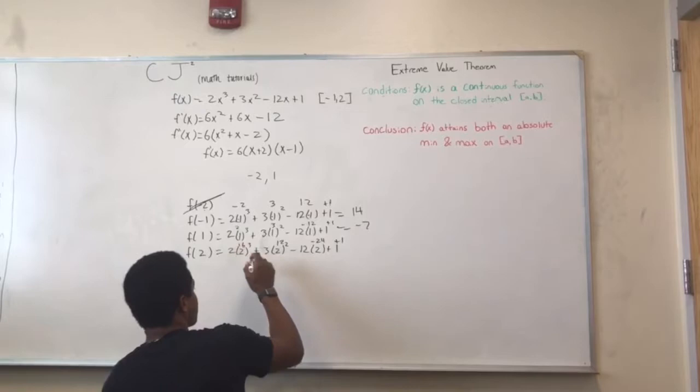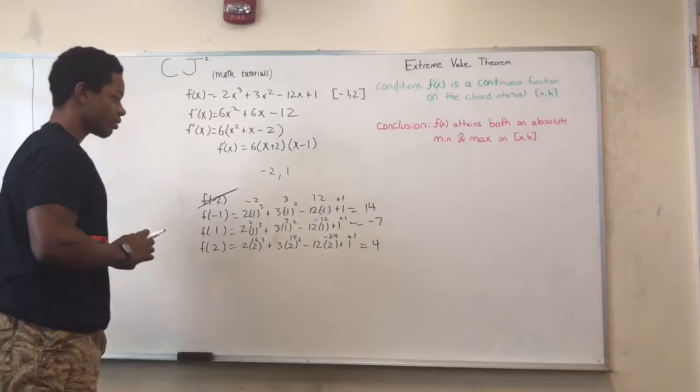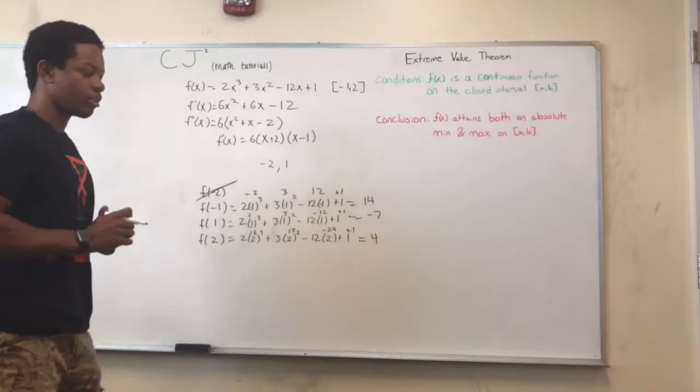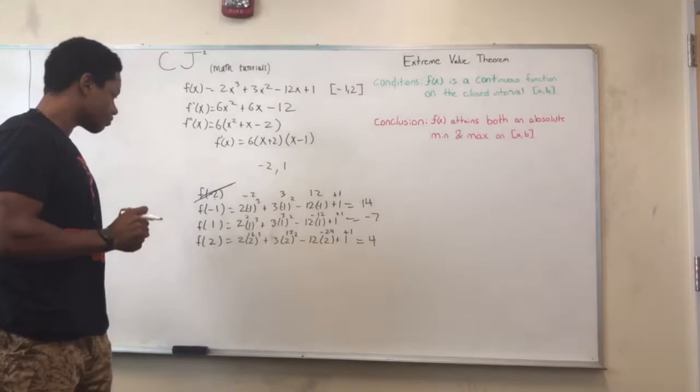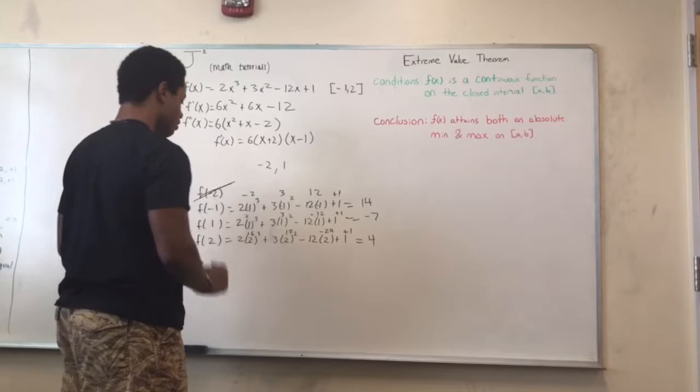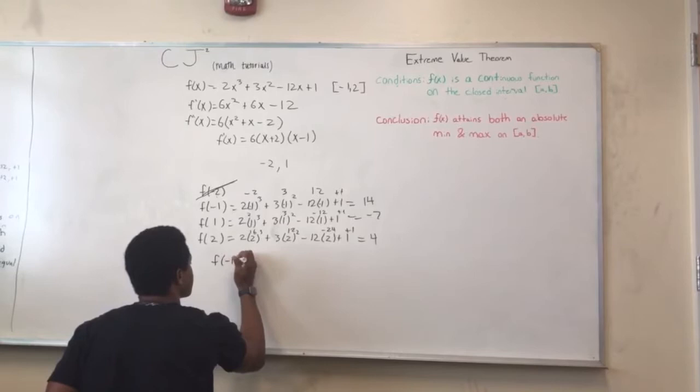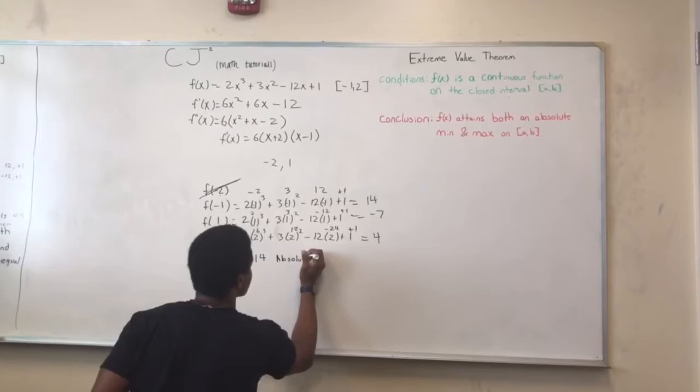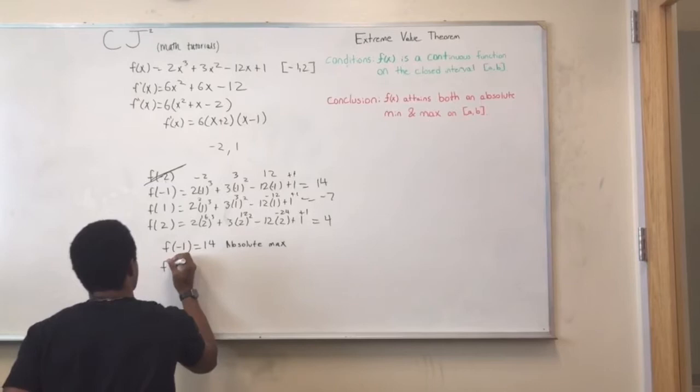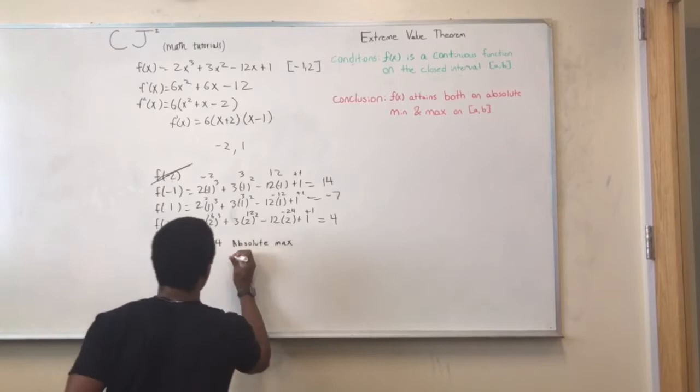And now you can see the highest value is 14. That means that there's a local maximum at F equals negative 1. And you can also see there's a local minimum at F equals 1, because this is negative 7, which is the lowest value. So we can conclude that F of negative 1, which is equal to 14, is the absolute maximum. And F of 1 equals to negative 7, which will be the absolute minimum.